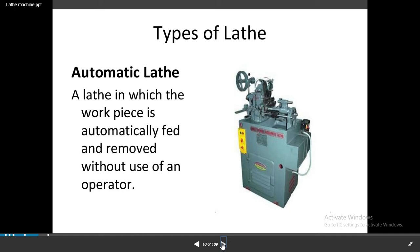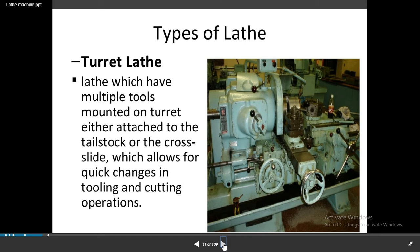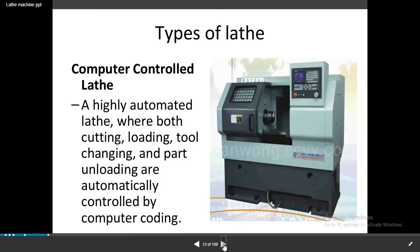The lathe in which most important operations are done automatically without human involvement is called automatic lathe. The lathe in which the workpiece is automatically fed and removed without use of an operator is called automatic lathe. Next, turret lathe — a semi-automatic lathe which gives multiple tools mounted on a turret, either attached to the tailstock or the cross slide, allowing quick change in tooling and cutting operations. Computer controlled lathe — highly automated, where cutting, loading, tool changing, and part unloading are automatically controlled by computer coding. It is fully automatic. Capstan and turret lathes are the semi-automatic lathes.